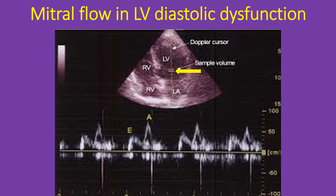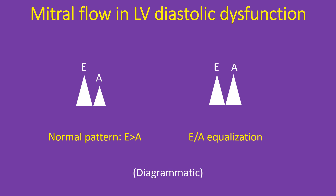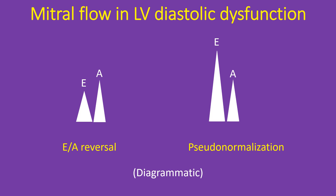The initial portion of the mitral diastolic flow is called the E wave (early diastolic), and the final portion which occurs during atrial systole is called the A wave. Normally, most of the left ventricular filling occurs during early diastole and the E wave is taller than the A wave. When ventricular relaxation is impaired in diastolic dysfunction, the atrial contribution to ventricular filling progressively increases and the A wave height increases, causing equalization of the E and A waves. As the severity of diastolic dysfunction increases, the A wave becomes taller than the E wave — this is known as E by A reversal.